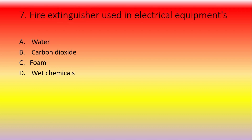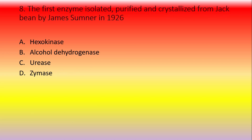For a fire on electrical equipment, which extinguisher is used? Options include water, carbon dioxide, foam, and wet chemicals. The answer is solid carbon dioxide (CO2). On electrical equipment, use the CO2 extinguisher — do not use foam or water on them.